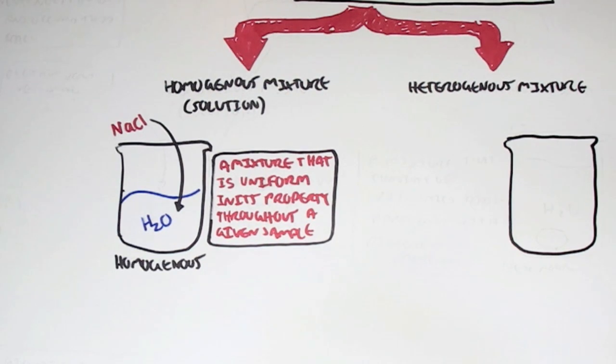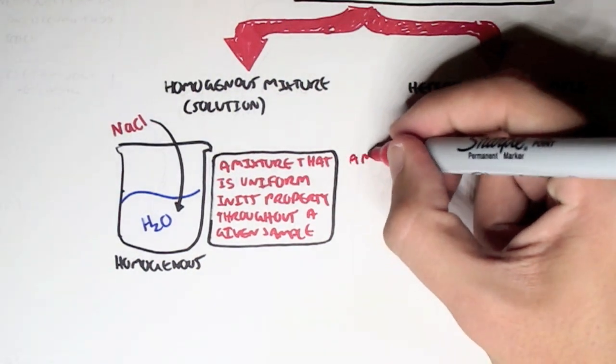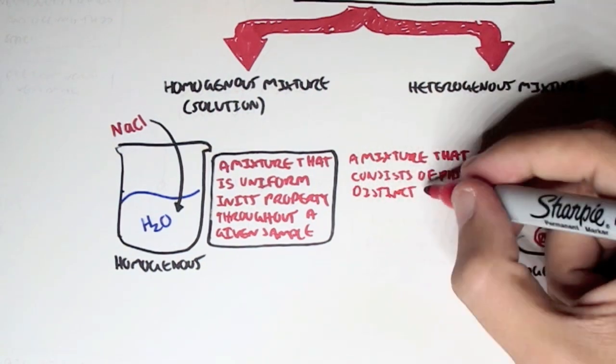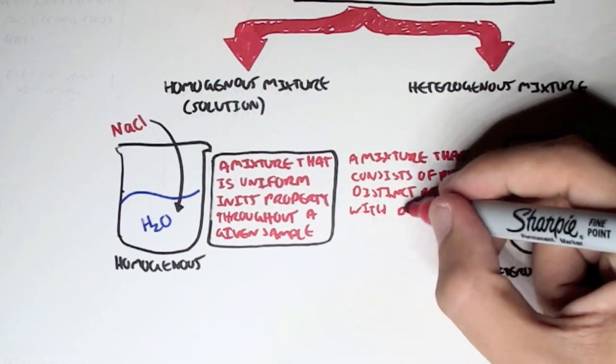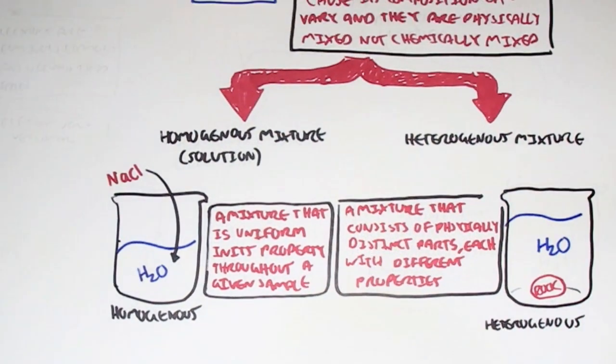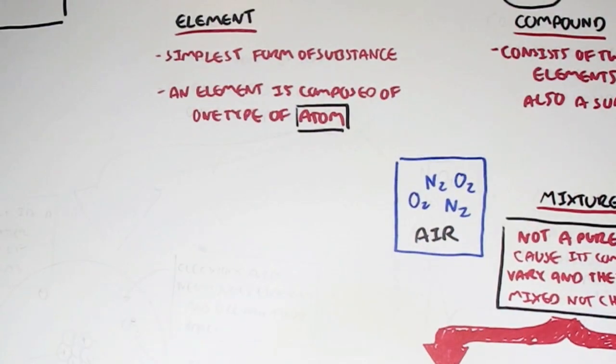A heterogeneous mixture, however, is, for example, if we have the same container of water, but instead of putting salt in there, we put a rock in there. This will form a heterogeneous mixture, which is a mixture that consists of physically distinct parts, each with different properties. So a rock and water have physically distinct properties. A rock will never mix with water, it will just stay there.